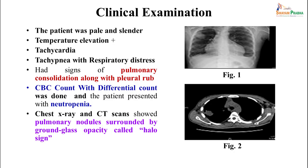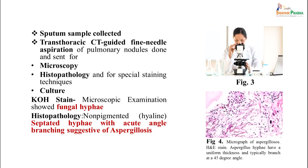On further history taking we realized there was no family history of similar episodes or tuberculosis in the family. On examination the patient was pale and slender; he had high fever and tachycardia, tachypnea with respiratory distress, and he also had signs of pulmonary consolidation along with pleural rub. CBC count was done and he was found to have neutropenia. Further chest X-ray and CT scan were done and we found that he had pulmonary nodules along with ground glass opacity, also called halo sign. Sputum was collected along with a trans-thoracic CT-guided fine needle aspiration from the pulmonary nodules, so that we could get a sample from the site of infection, and these were sent for microscopy and culture.